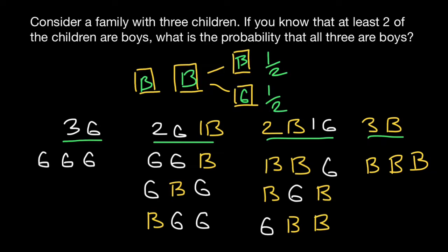Now let's take a look. We are told that in this family, at least two of the children are boys. So that means that we exclude this variant, and we exclude this variant, because here is one boy and two girls.